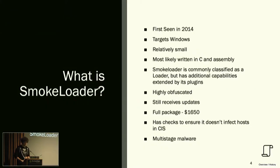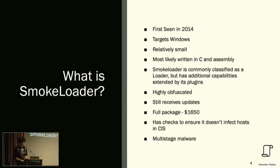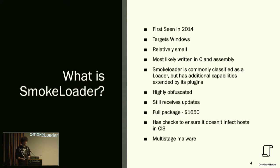What exactly is Smoke Loader? It's a piece of malware classified as a loader — its entire job is to deliver additional malware. Think of it like the UPS system where people can just send malware through it. It first appeared in 2014, targets solely Windows, and is around 30 kilobytes — pretty small compared to the typical 100 to 200. It's written in C and assembly; pure assembly is not something you really see in malware too much, but in this case they had to do a good chunk of development in assembly.